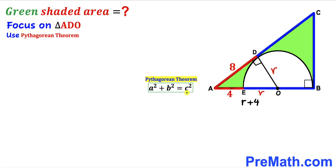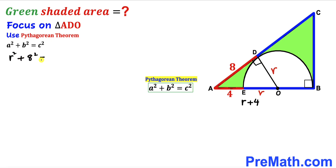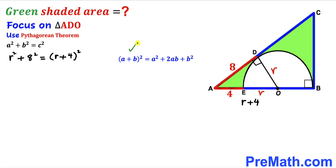The Pythagorean theorem states: A² + B² = C². In our case the hypotenuse is (r + 4), while the two other legs are r and 8. Filling in the formula: r² + 8² = (r + 4)². We now recall the identity (A + B)² = A² + 2AB + B², and apply it to the right-hand side.